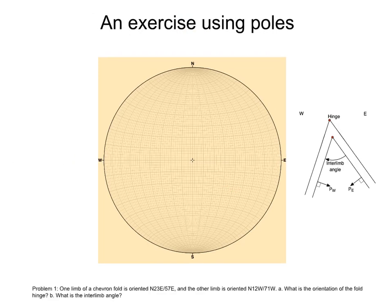Poles are very useful to solve orientation problems related to planes and lines. In fact, we can solve the problem we solved last lecture using poles. In this case, instead of using the limbs of the fold to estimate the hinge of the fold, we can use the poles to the limbs, Pw and Pe. In addition, we can use these poles to estimate the angle between the limbs. We'll do this in class.